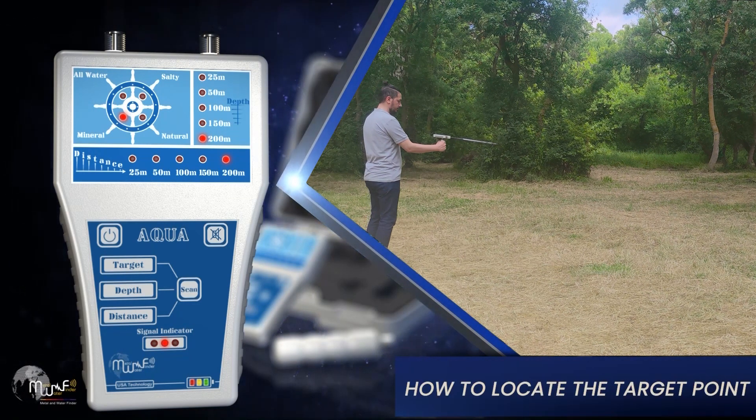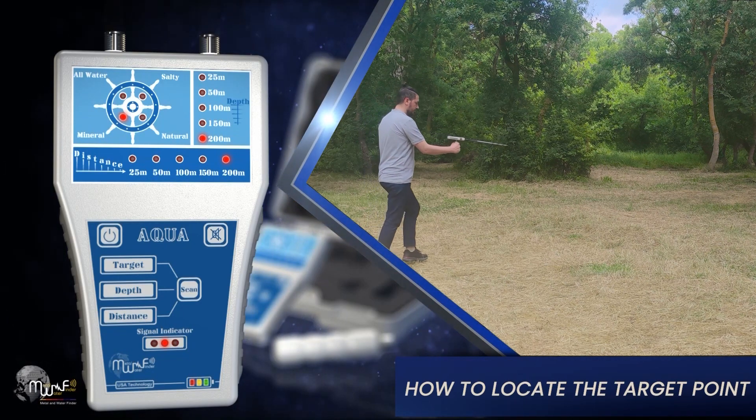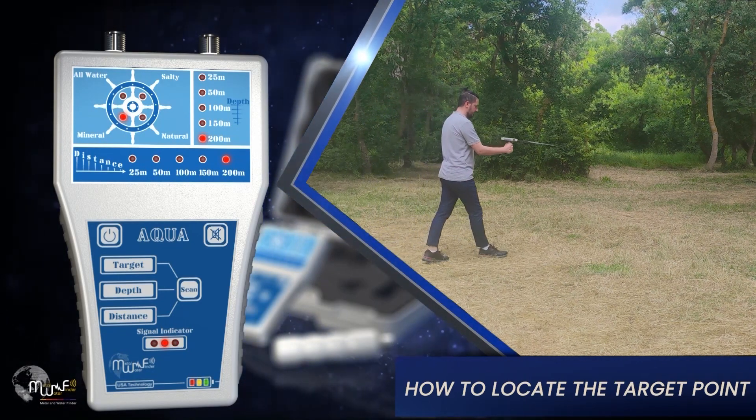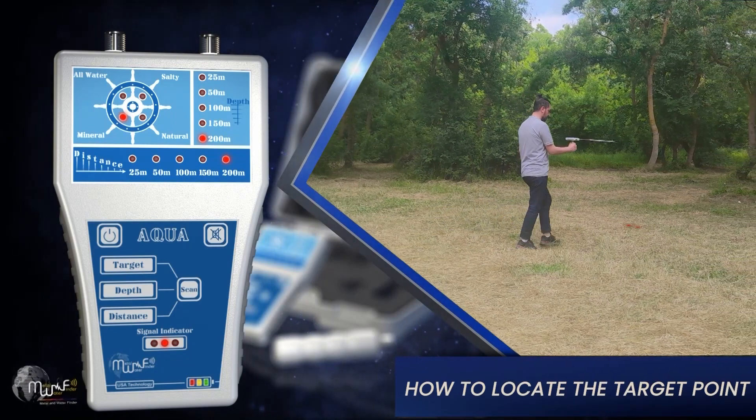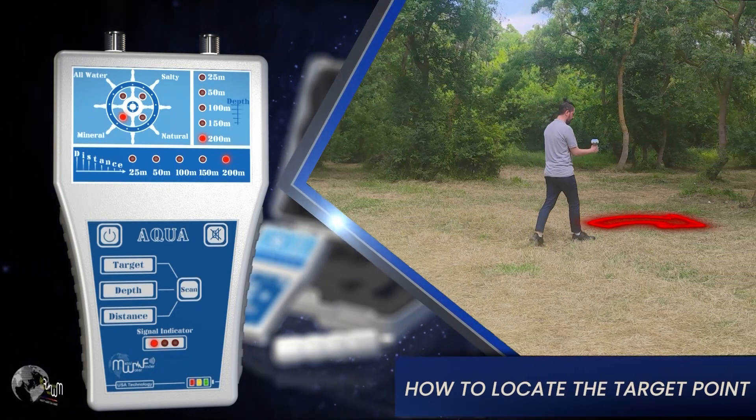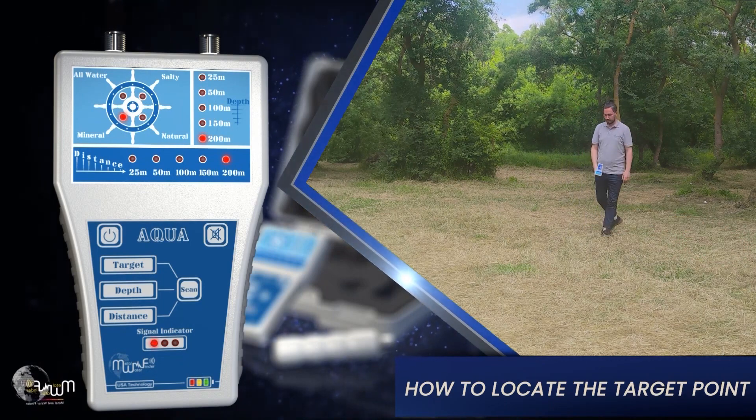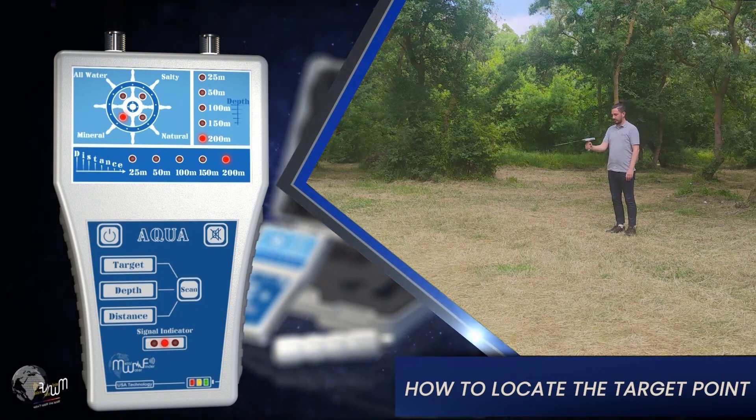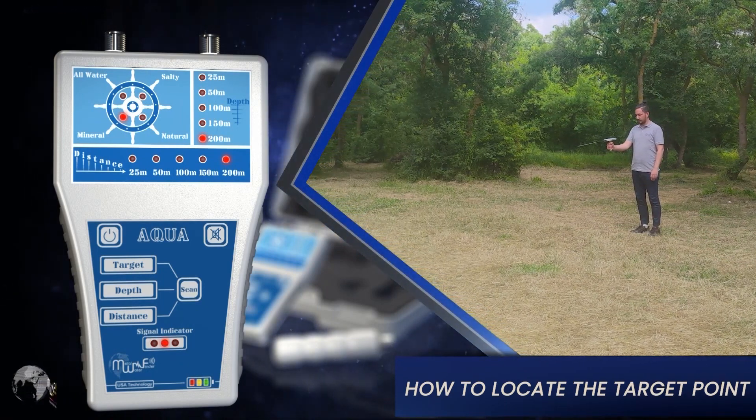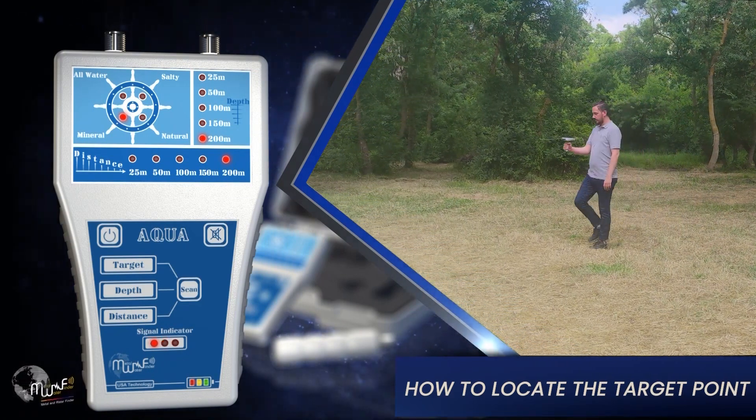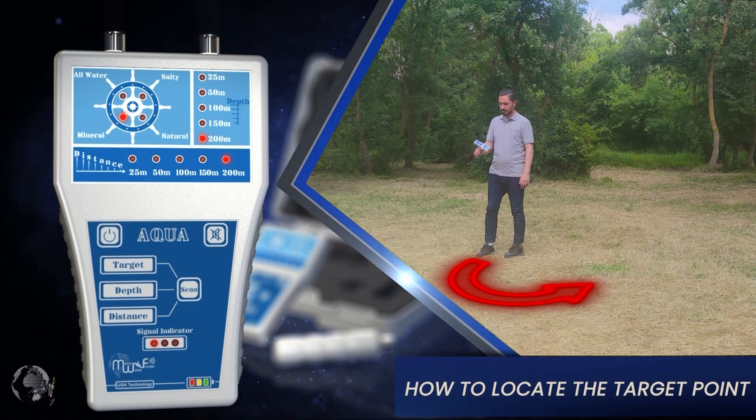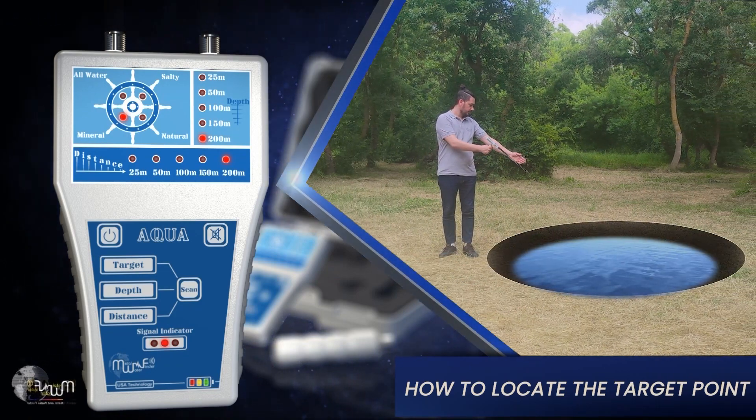How to locate the target point? Walk with the device and follow the device's pointing signal and voice alarm towards the target, until you reach a point that the device will swing back and stop the voice alarm, which means that you have exceeded the target. Then turn the device backwards and walk slowly, until you find that the device has turned, and turn again after you exceeded the target point.